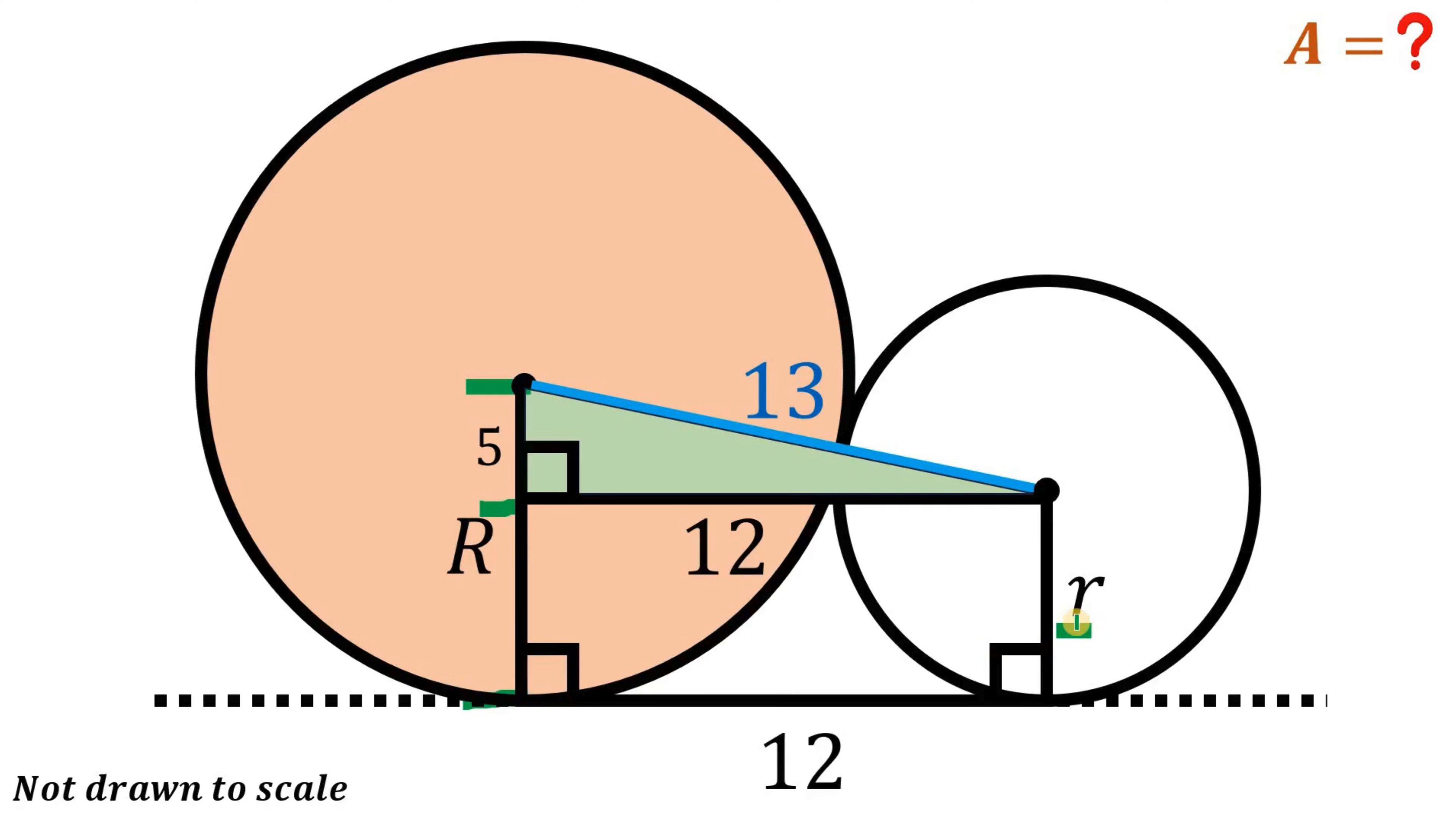So if we subtract small r from capital R, the result is positive five. So one equation is capital R minus small r equals five.